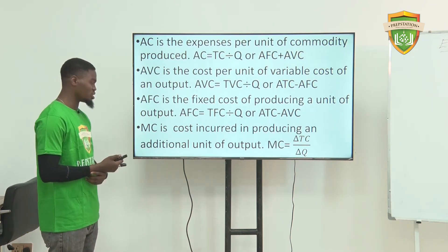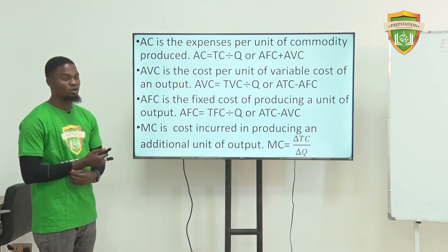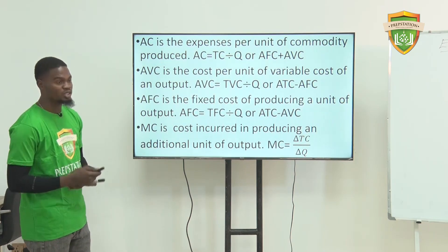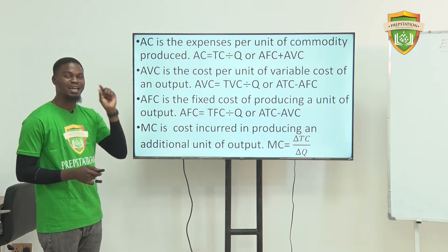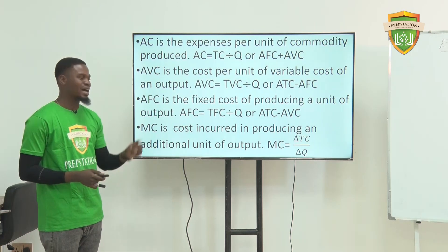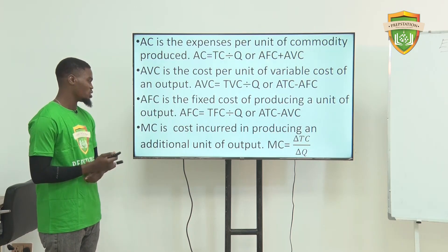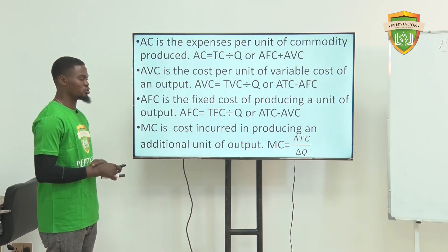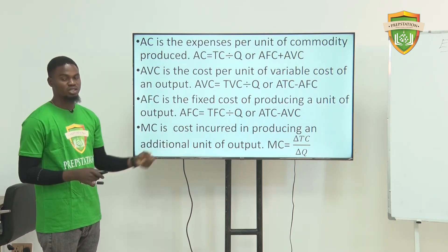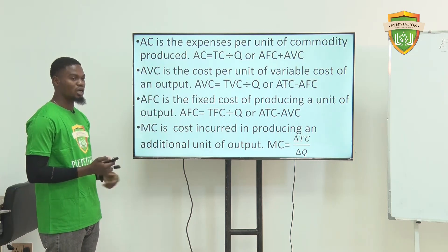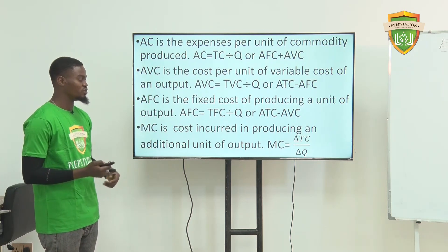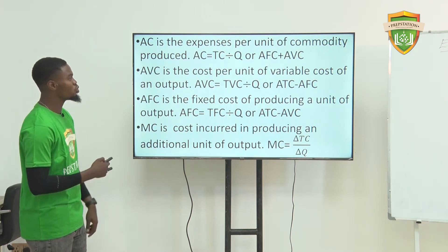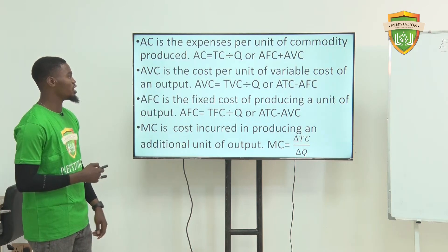Then you have marginal cost, which is the cost incurred in producing an extra, additional unit of output. The formula is: change in total cost divided by change in quantity of output.